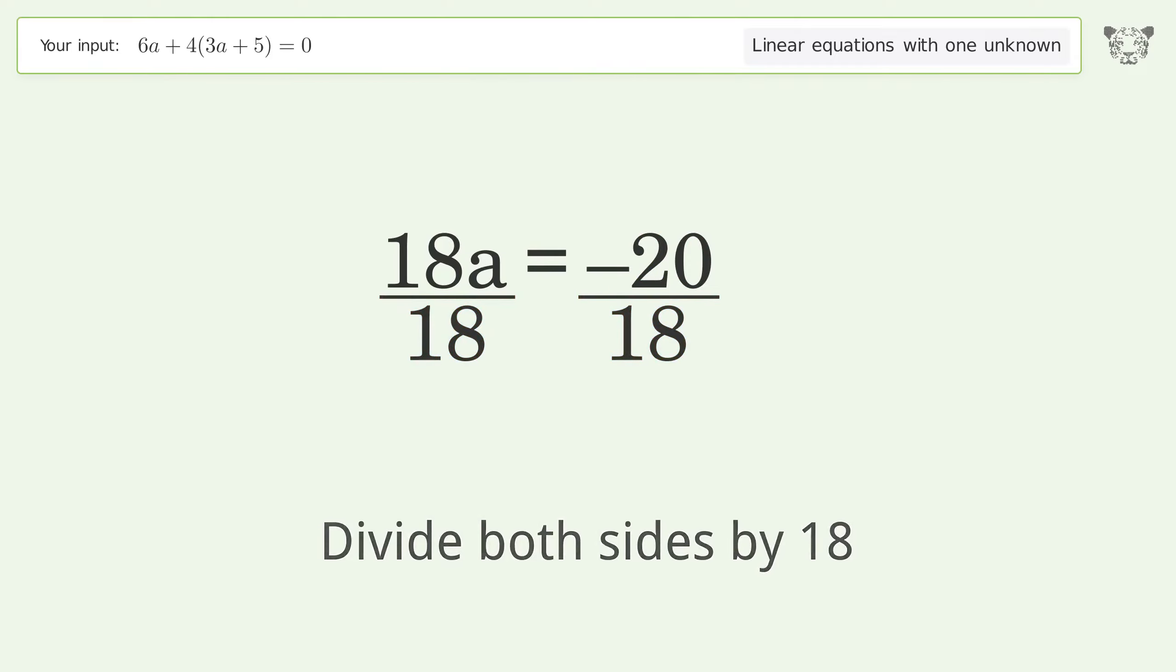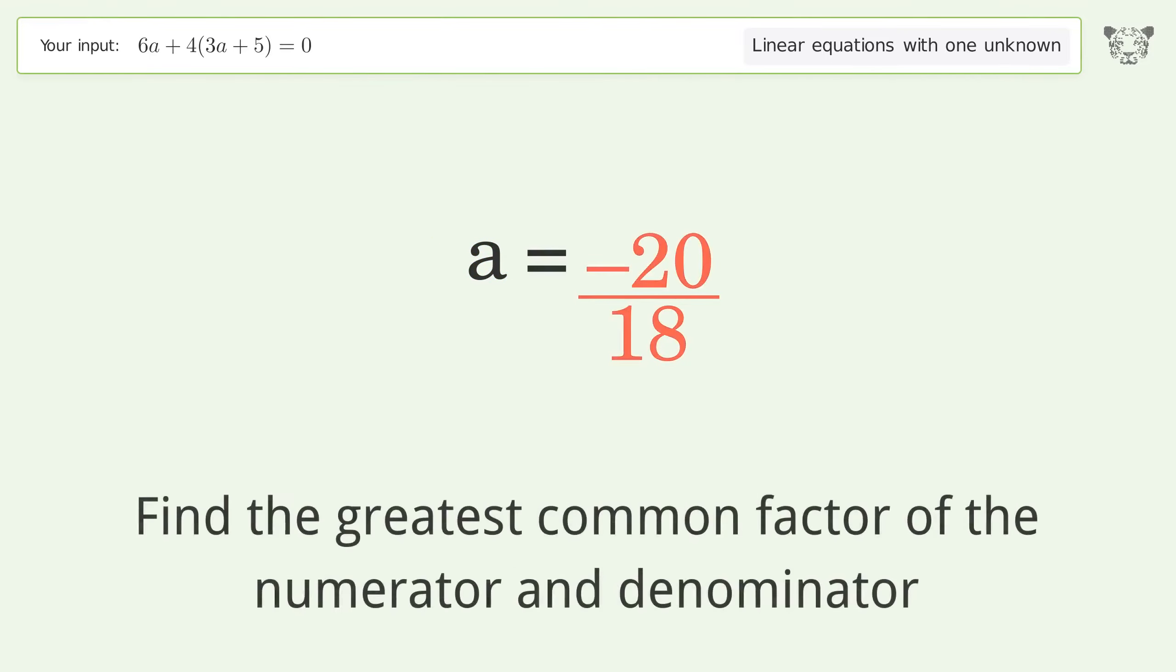Isolate the a by dividing both sides by 18. Simplify the fraction.